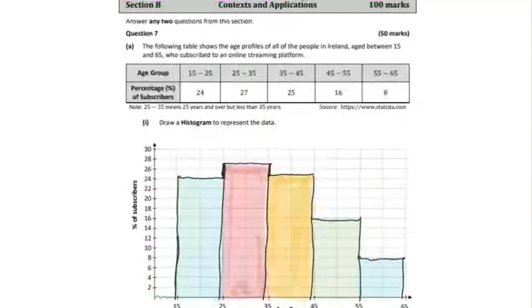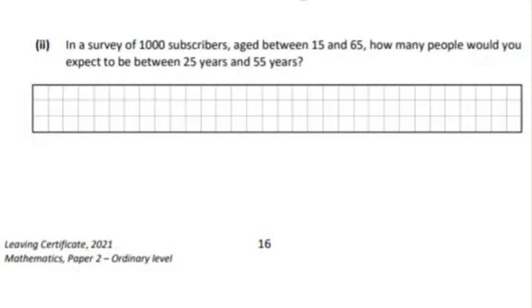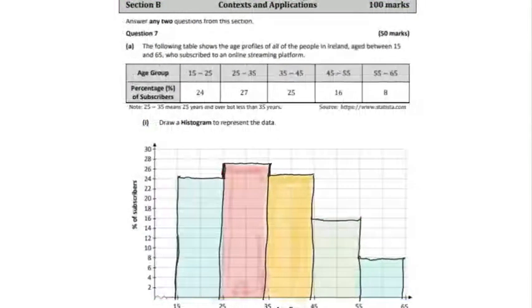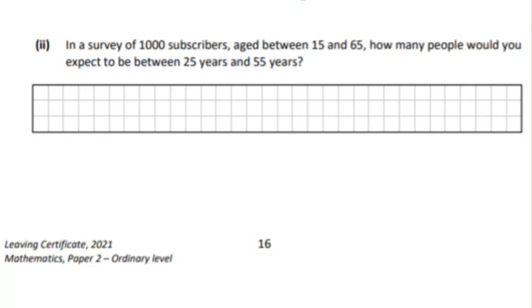the subscribers are in the mid-range between 35 and 45. In a survey of 1000 subscribers aged between 15 and 65, how many people are expected to be between 25 and 55 years? Let's get the proportion from the graph. As far as 55, if we add up all of those values, we get a total of 92%. So apply the 92% to the 1000 subscribers, and therefore we will get 920 subscribers.